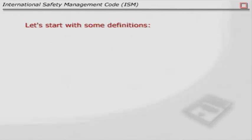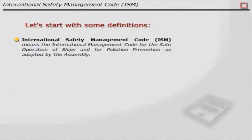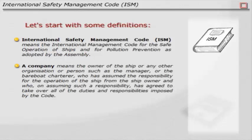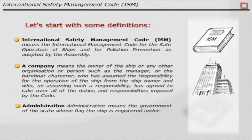Let's start with some definitions. The International Safety Management Code means the International Management Code for the safe operation of ships and for pollution prevention as adopted by the Assembly. A company means the owner of the ship or any other organization or person, such as the manager or the bare-boat charterer, who has assumed the responsibility for the operation of the ship from the ship owner and who, on assuming such responsibility, has agreed to take over all duties and responsibilities imposed by the code. Administration means the government of the state whose flag the ship is registered under.